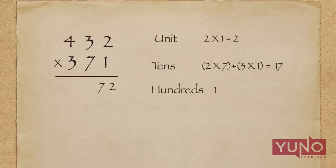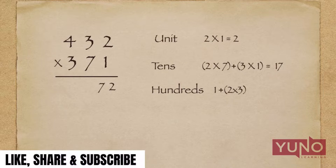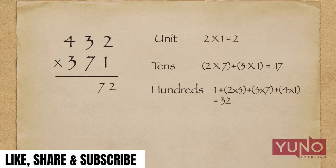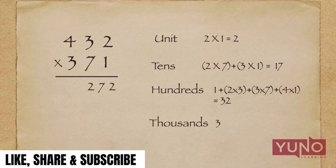In the next step, I will perform the cross multiplication of all three digits — that is 2 × 3, 3 × 7, and 4 × 1 — and add all these multiplications along with the carry. The total will be 32. I will put 2 in the answer and 3 will be the new carry.